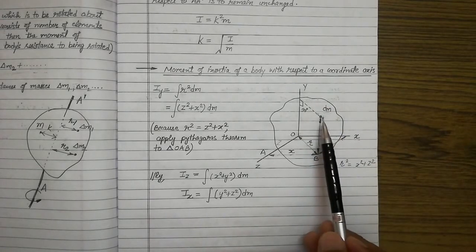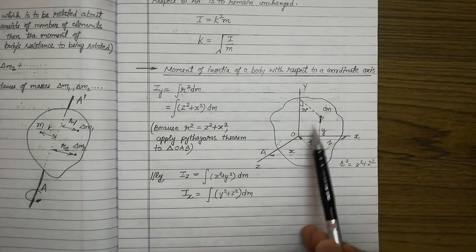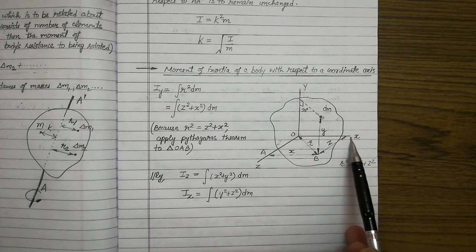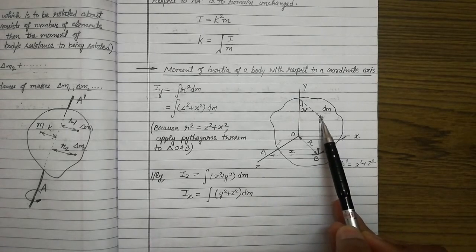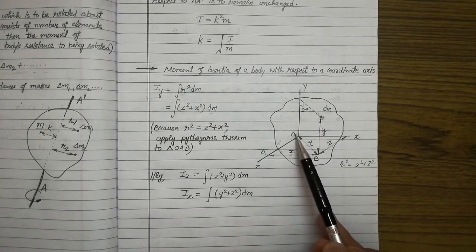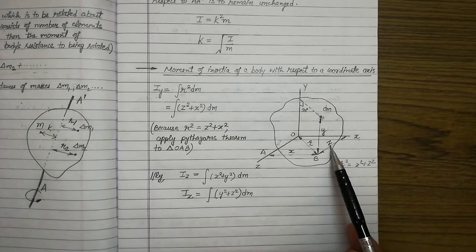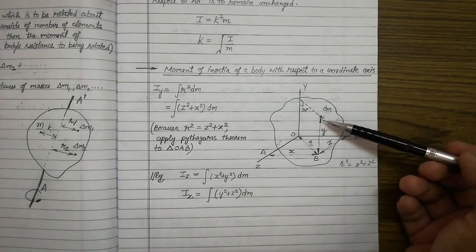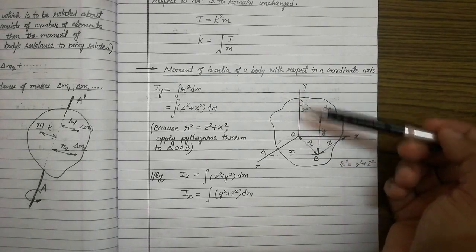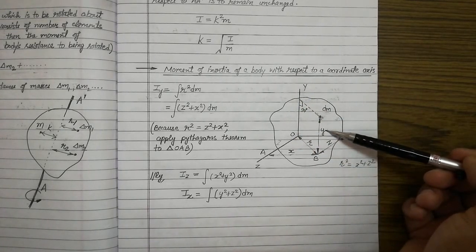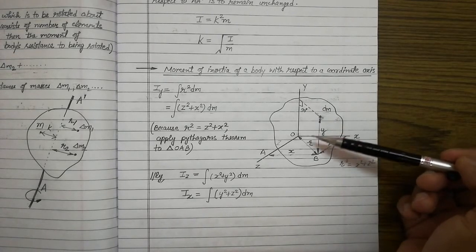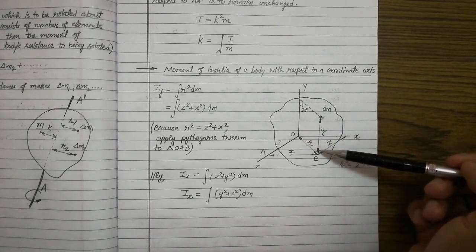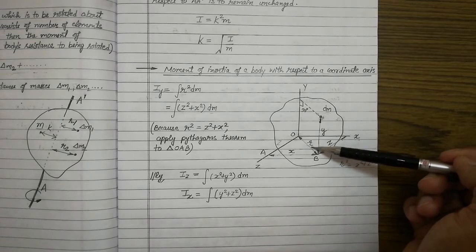The distance of the small element from the origin along the x-axis is labeled x units, the distance along the z-axis is labeled z units, and the distance along the y-axis is labeled y units. The vector distance of that particular element from the origin is given as r units.